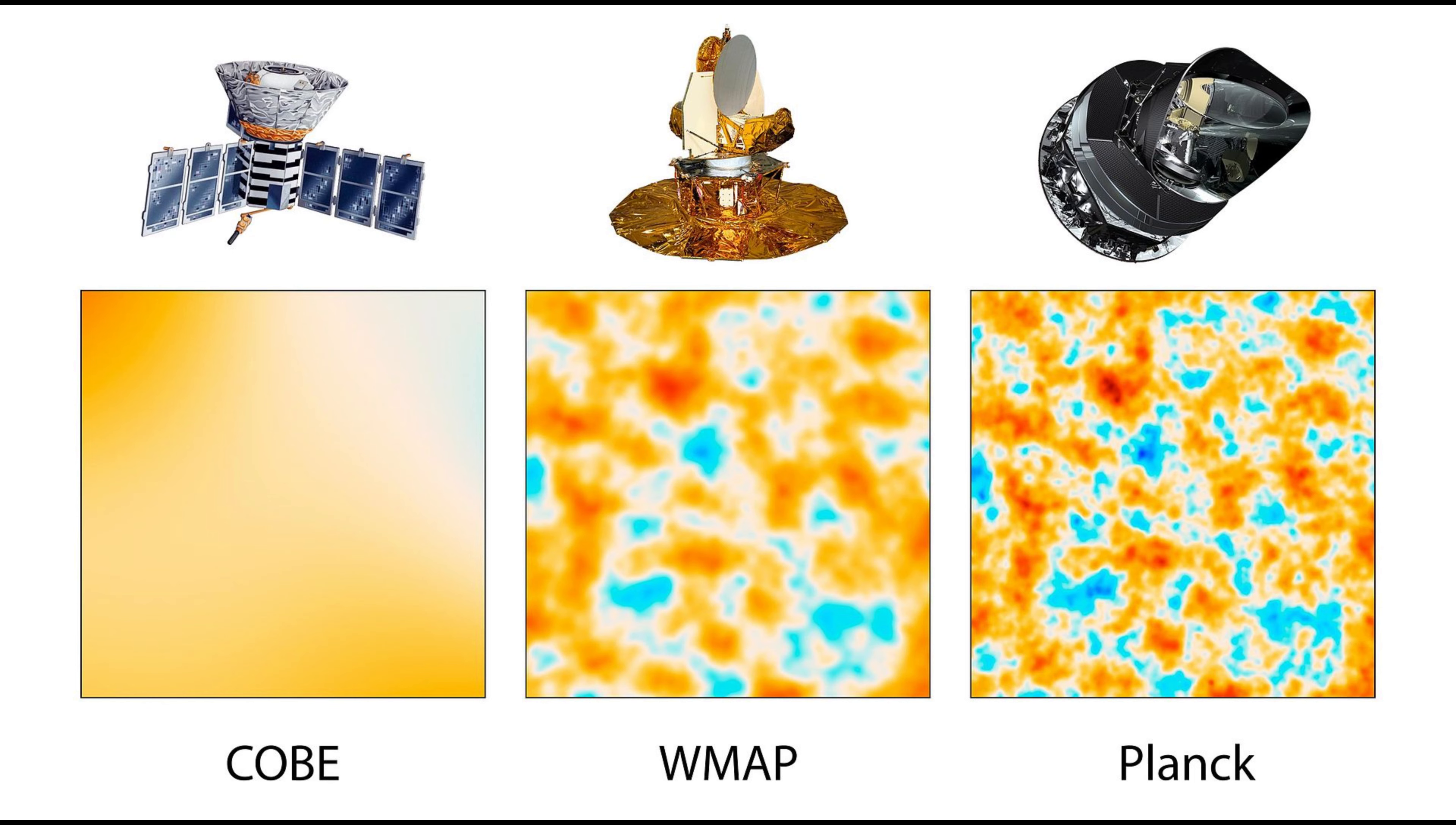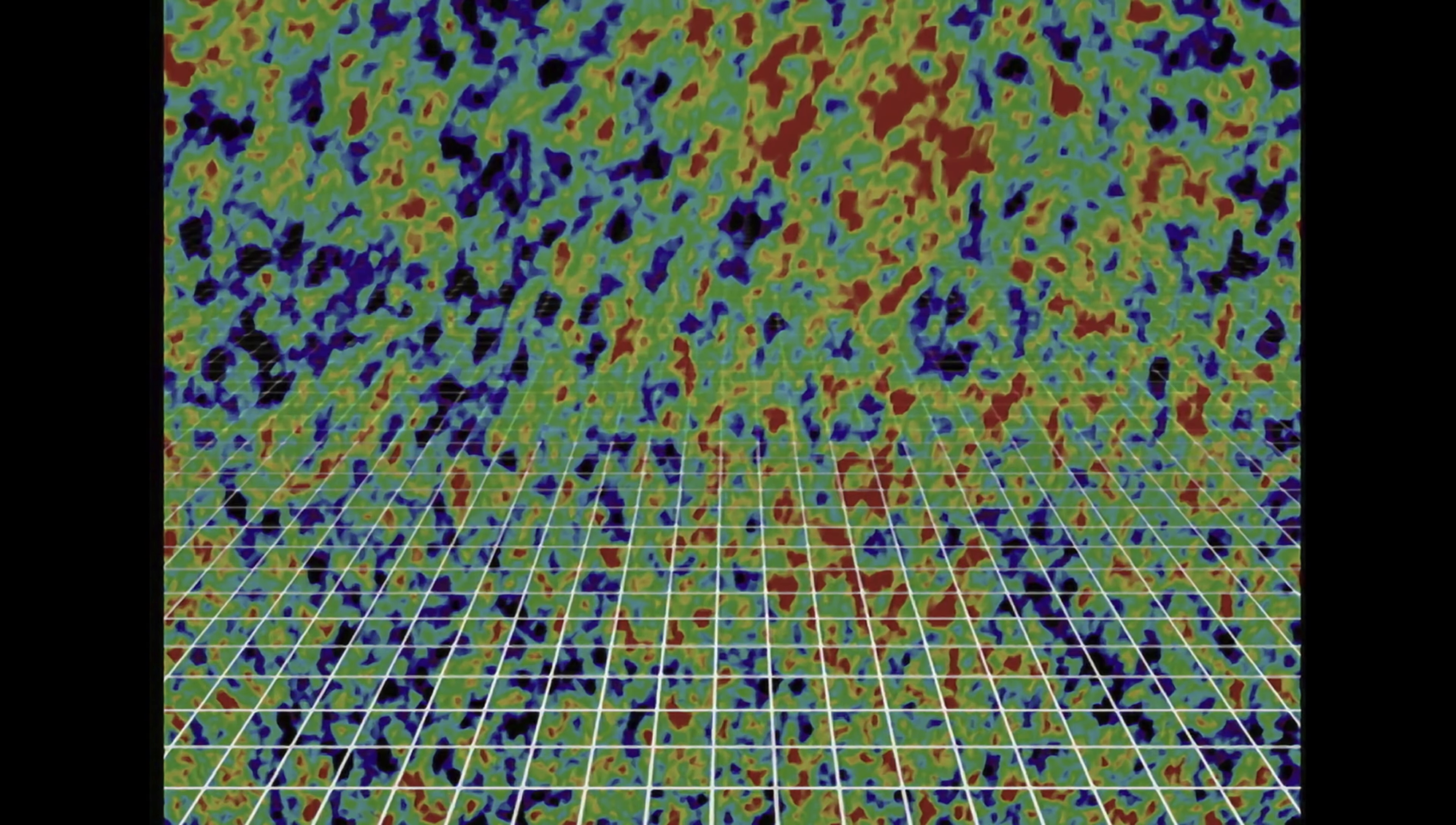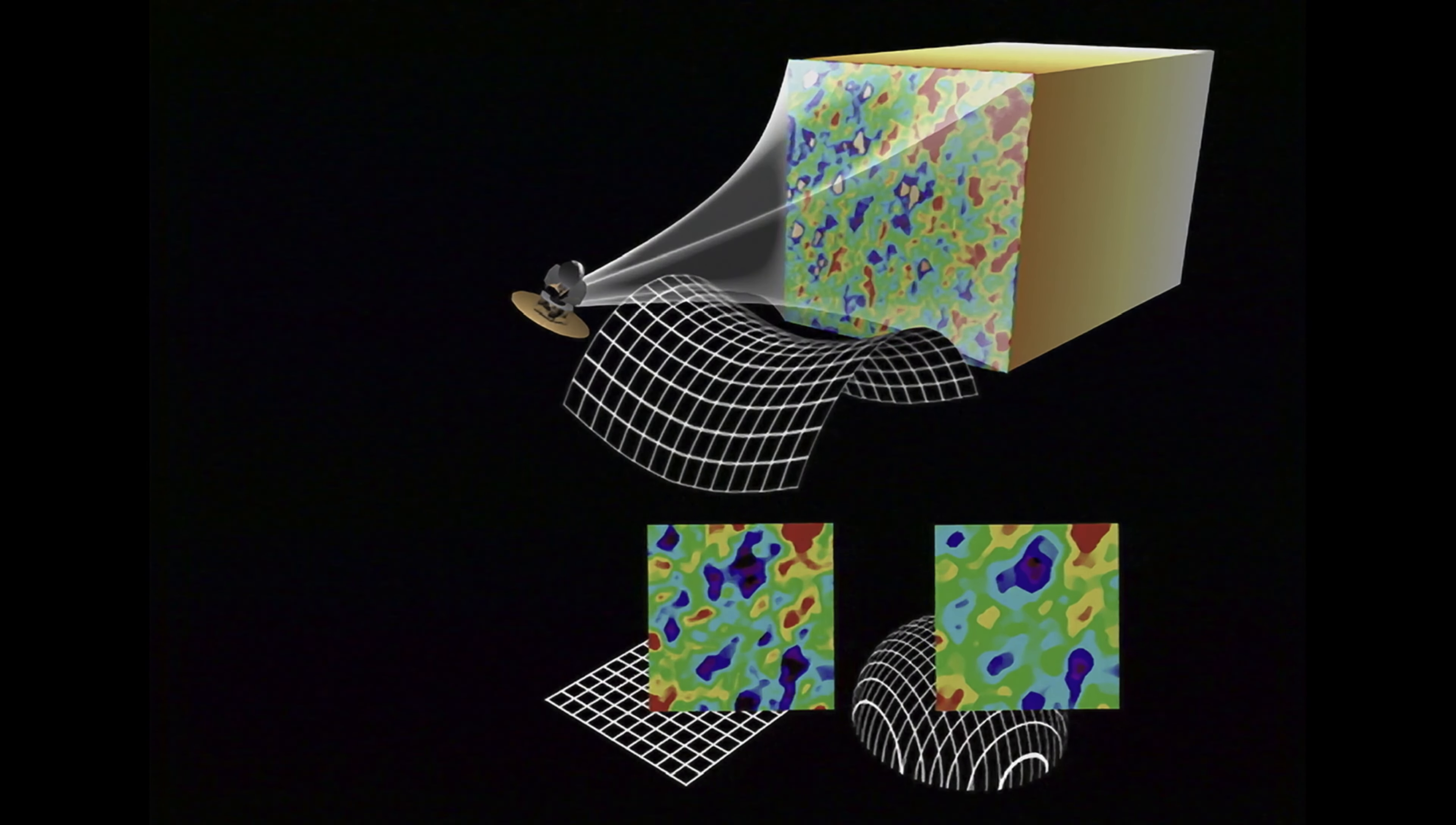If the universe were curved, light rays traveling from different directions would have experienced different paths and picked up different temperature signatures. This would lead to distortions in isotropy, non-uniform fluctuations, and deviations in the power spectrum. As we'll see, the strong concordance between observation and prediction provides compelling evidence for a flat universe on large scales.